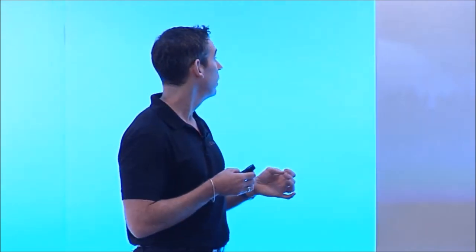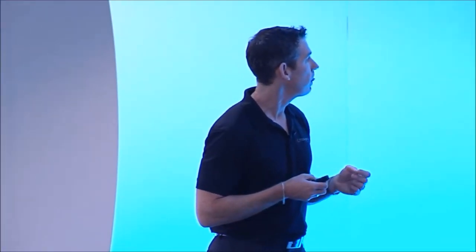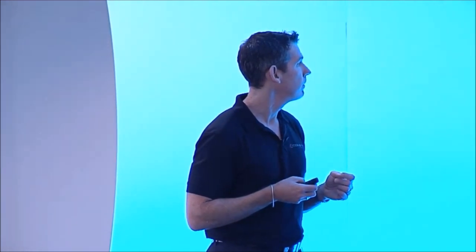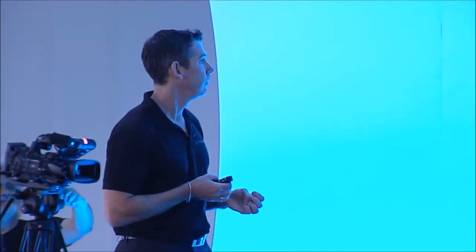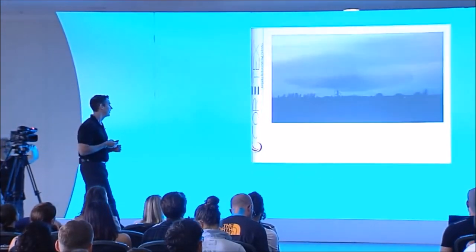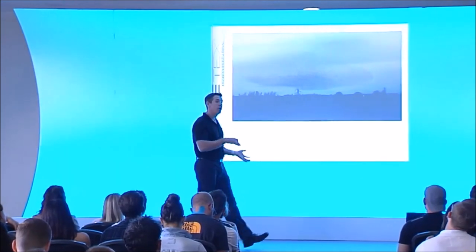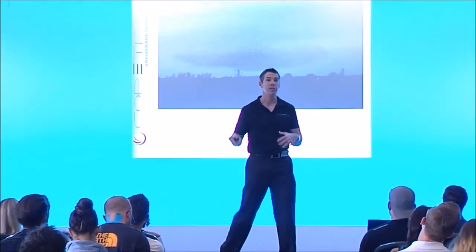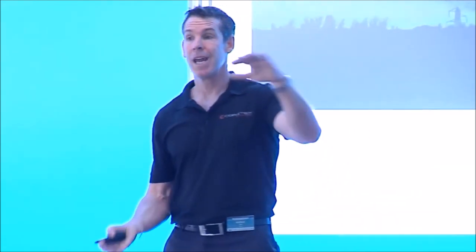That entire cluster is individual starlings. As they move through space and create all those different observable formations, it's because the local birds are interacting with one another. The result is this beautiful, picturesque dynamic formation of all these birds moving through space. That's really a wonderful example of what a dynamic system is all about.